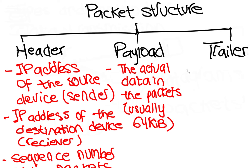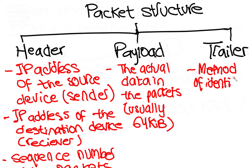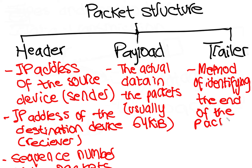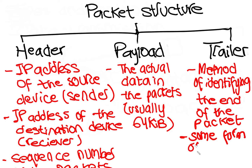For each packet, the packet trailer consists of some way of identifying the end of the packet. This is essential to allow each packet to be separated from each other as it travels from sending to receiving station. An error checking method, cyclic redundancy checks, are used to check data packets.